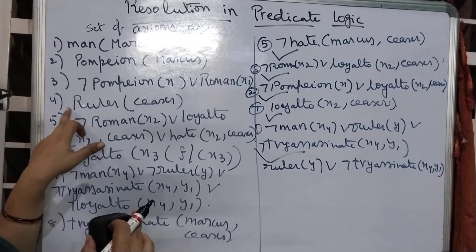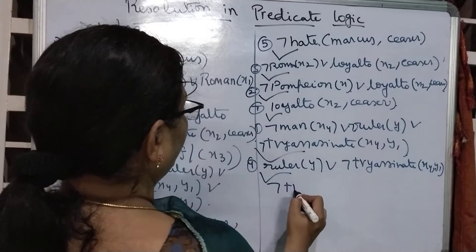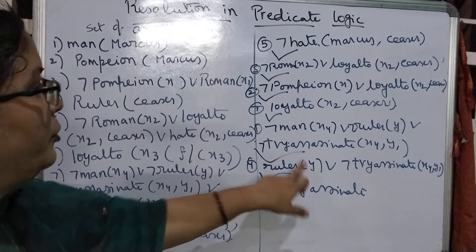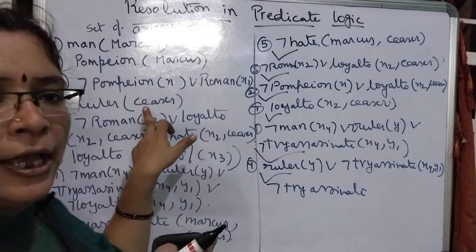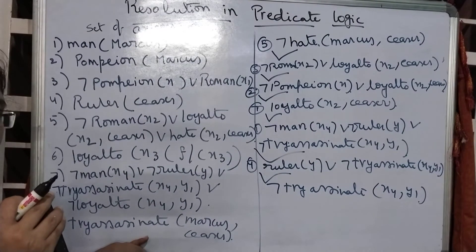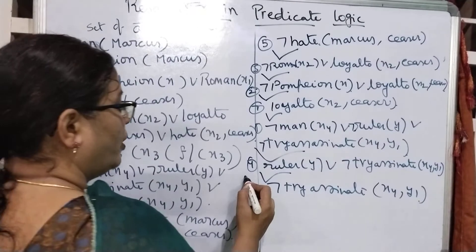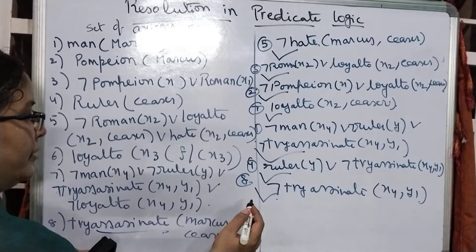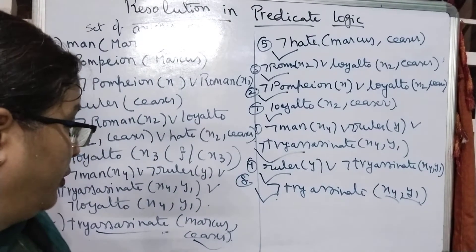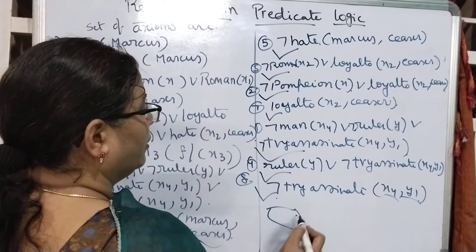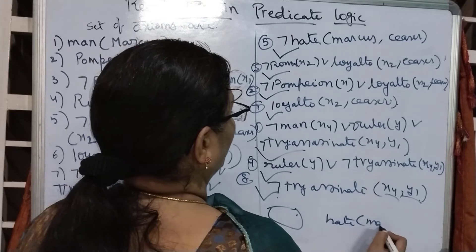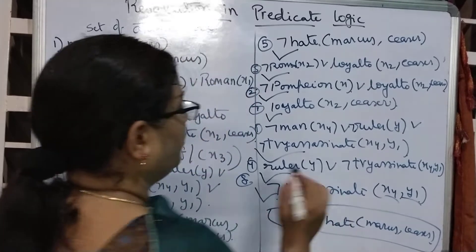This is also negation ruler — negation ruler can get cancelled with axiom number 4. What is the resultant now? y is substituted in the form of Caesar. Ruler and axiom 4 ruler get cancelled. So negation try_assassinate(x4, y1) we got. Is there any axiom that can get cancelled with try_assassinate? The eighth one is there. I am clubbing with the eighth one — negation try_assassinate and try_assassinate. Marcus is substituted with x4 and Caesar is substituted with y1. Finally, I got the contradiction. There is nothing left to resolve. We got the contradiction and we can prove that hate(Marcus, Caesar).